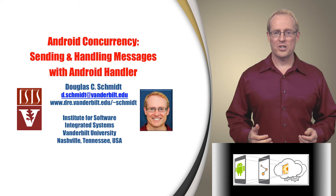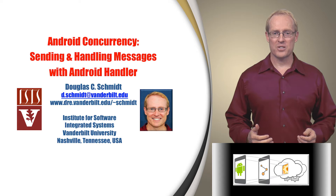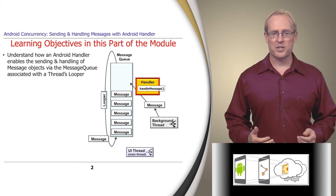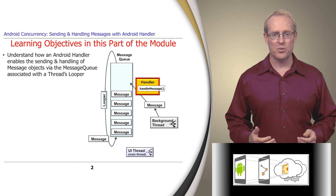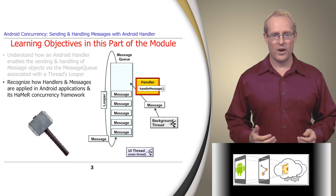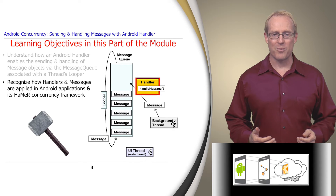Welcome to the next part of the module on Android concurrency frameworks, which wraps up our discussion of the handler class. This part explains how the handler class enables the sending and handling of message objects via the message queue associated with the thread's looper. It also shows how handlers are applied in Android applications and its Hammer concurrency framework.